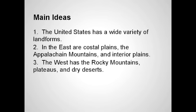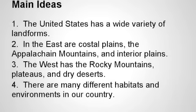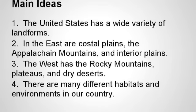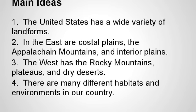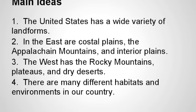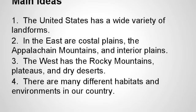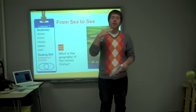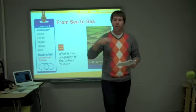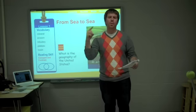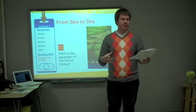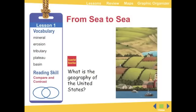Third, we're going to cover the western part of the United States, including Alaska and Hawaii, and its landforms that include the Rocky Mountains, plateaus and basins, and some hot, dry areas. Fourth, the United States as a whole has a lot of habitats and ecosystems. Since it's so big and changing from place to place, it really supports a lot of different climates. We'll also cover five vocabulary words: mineral, erosion, tributary, plateau, and basin. The big essential question is: what is the geography of the United States?